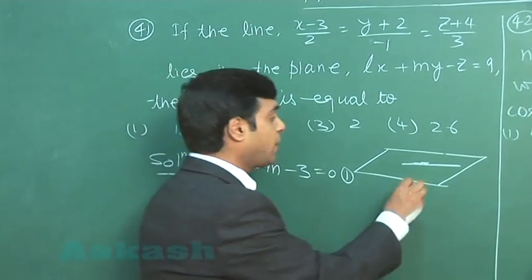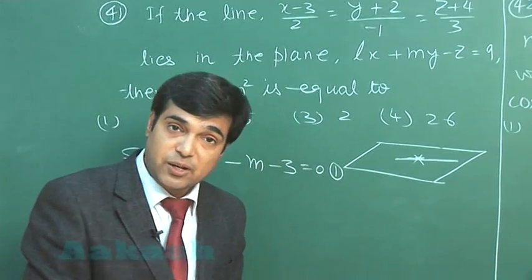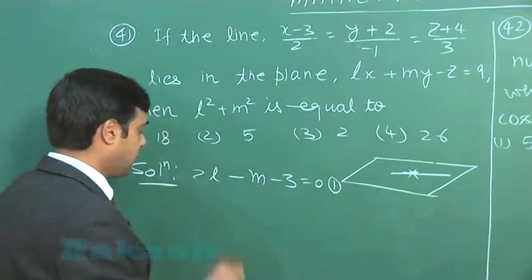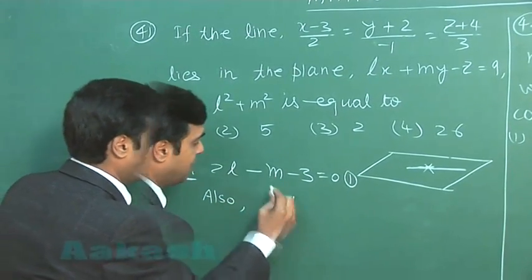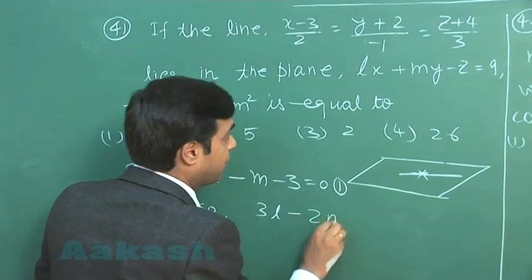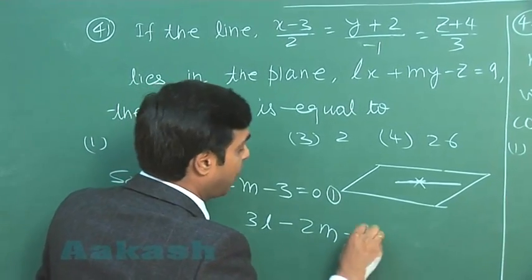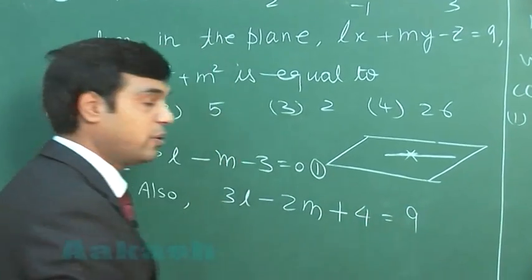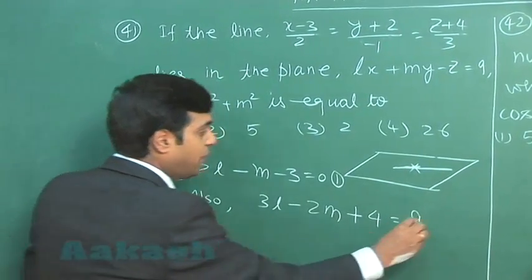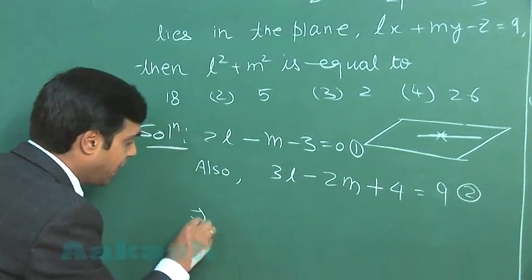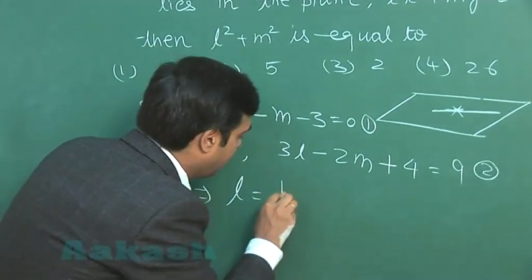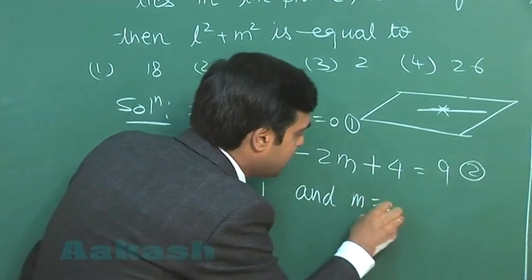Since the line is lying on the plane, every point of the line satisfies the equation of the plane. We have one point (3, minus 2, minus 4); substituting this point into the plane equation gives 3l minus 2m plus 4 equals 9 as equation 2. Solving equations 1 and 2, we get l equals 1 and m equals minus 1.